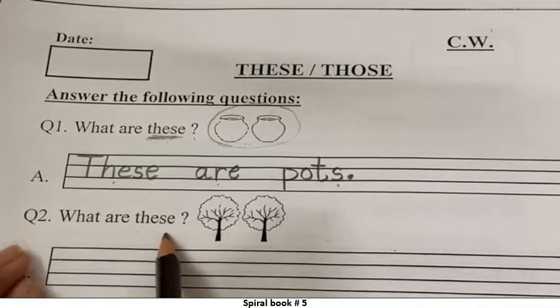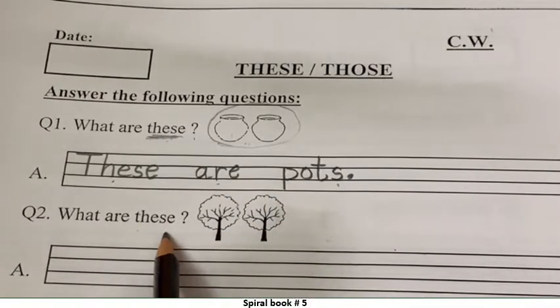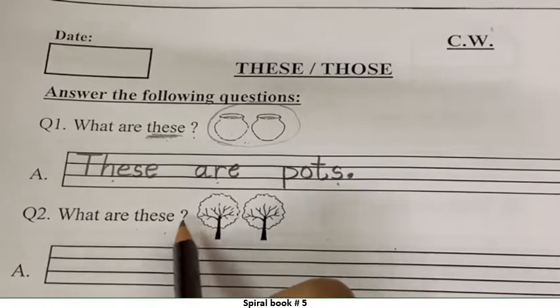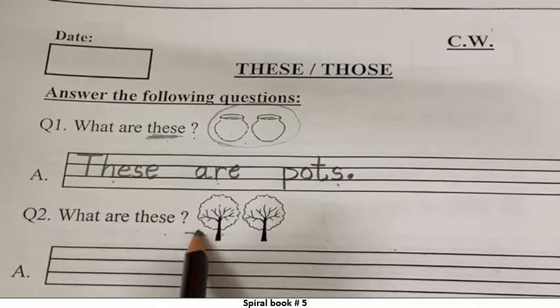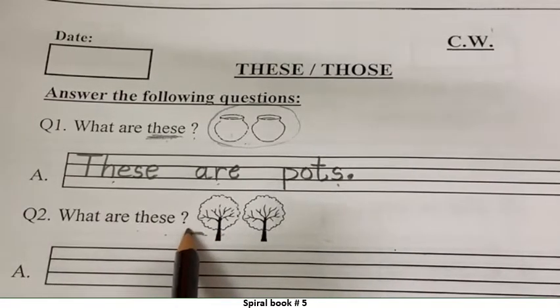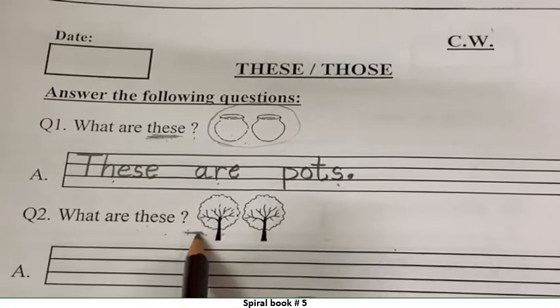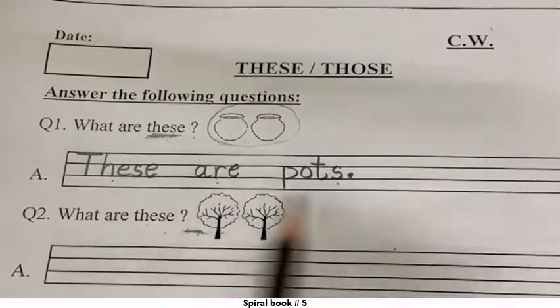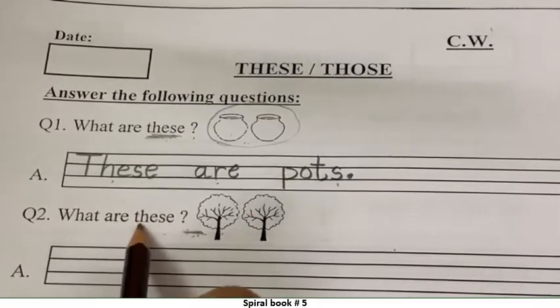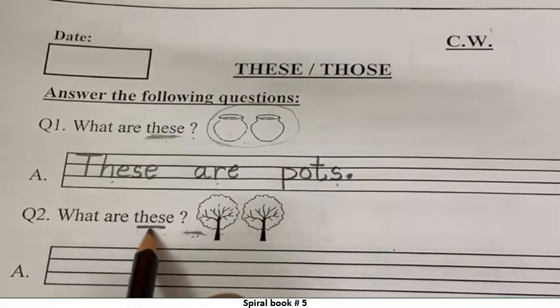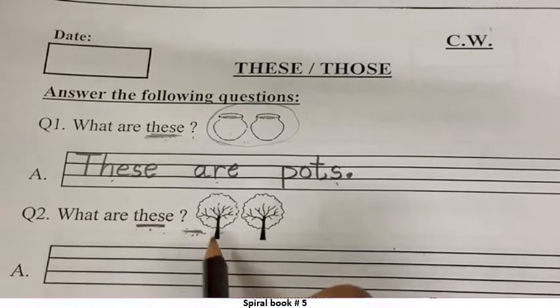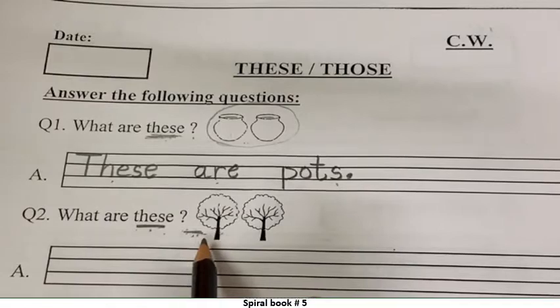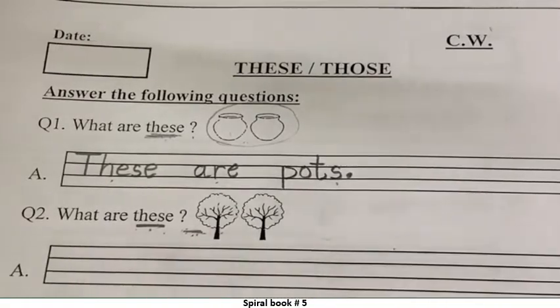Next one. See, what are these? I'm asking. Mein pooch rahi hoon. What are these? Teacher, why are you saying these? Because these trees are close. So what are these? These are trees. Are they far? No. They are near. That's why these. Right, children? What is this? Children, what is this? These are trees.